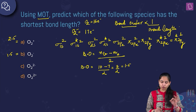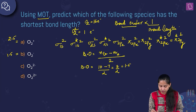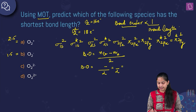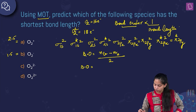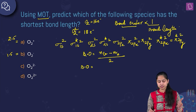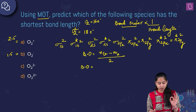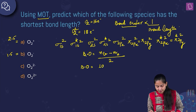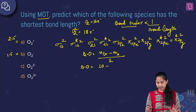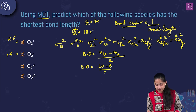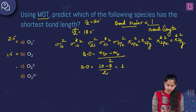O₂²⁻ has 18 electrons (two more than O₂). Bonding electrons = 10, anti-bonding electrons = 8. Bond order = (10 − 8) / 2 = 1. So the bond order for O₂²⁻ is 1.